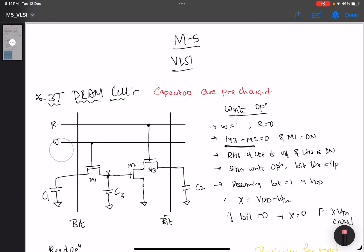So basically what is happening? Since it is a write operation, the bit lines are now considered as input. Assuming bit is equal to 1, then basically this part is VDD.